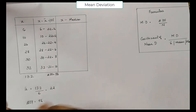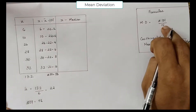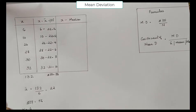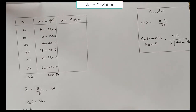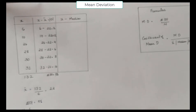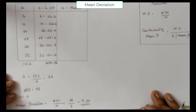What is mean deviation? Mean deviation is equal to sigma D divided by N, where N is the number of items. N is equal to 6. So mean deviation equals 56 divided by 6, which equals 9.33. This is the mean deviation from mean.